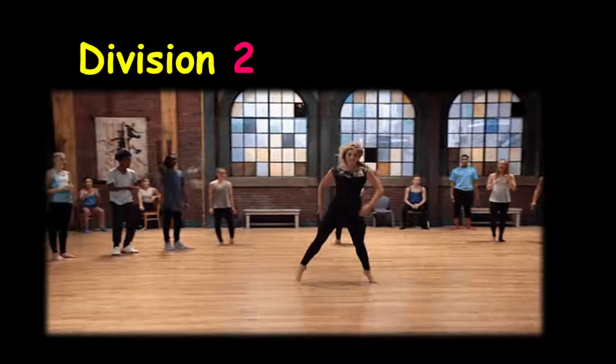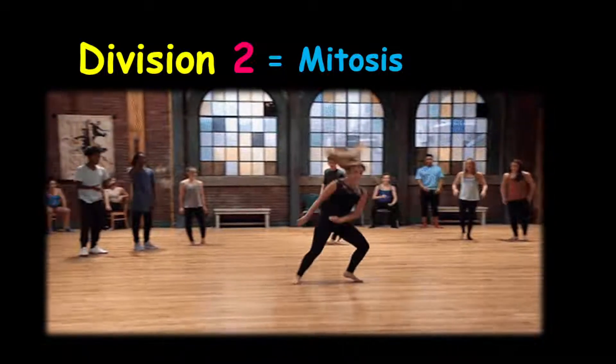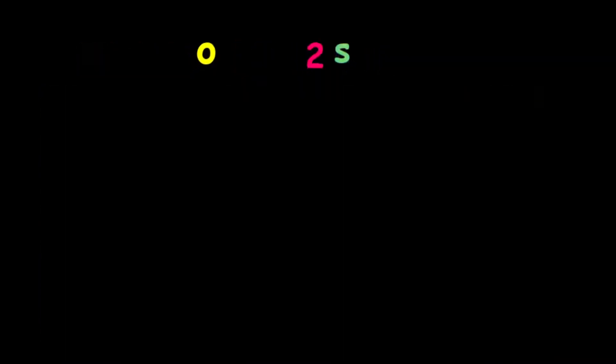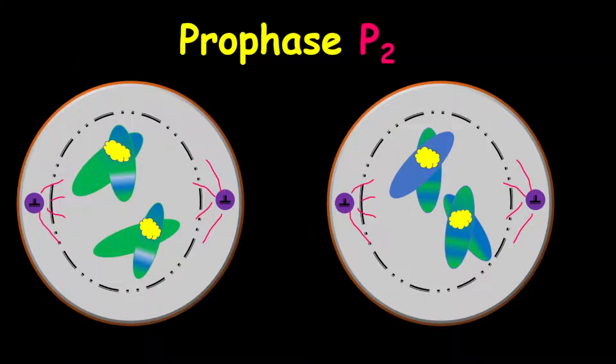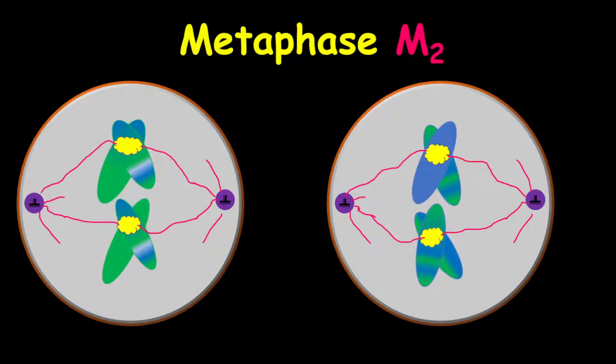Division two is just like mitosis. The splitting or the dividing is smooth, nice, and easy. The first phase in our division two is our prophase two. And this is just like mitosis. The chromosomes will condense, and after they condense, they undergo metaphase two, which they align in the middle of the cell. And just like mitosis, they align along the metaphase plate in single file.